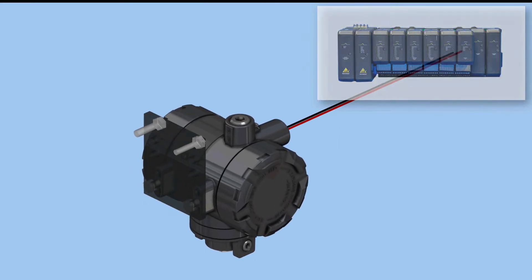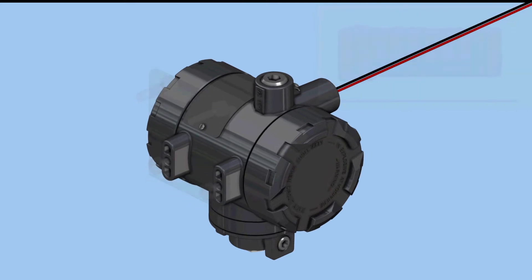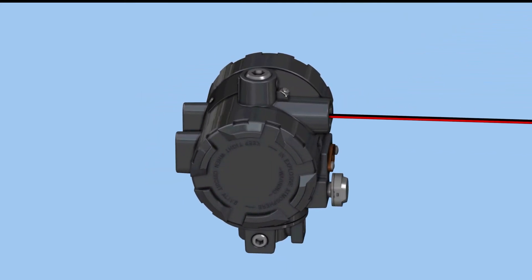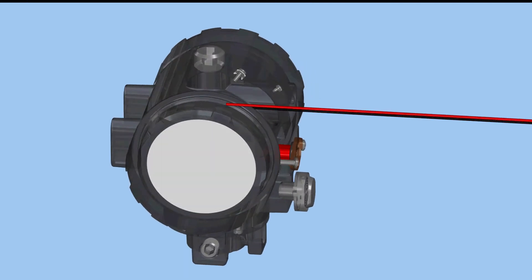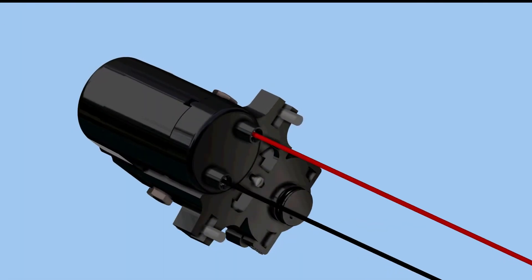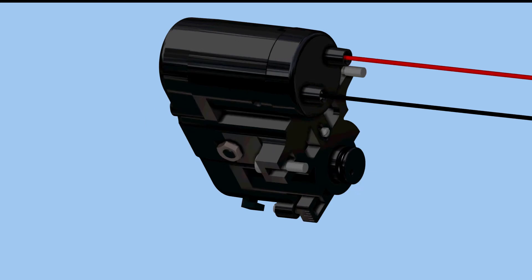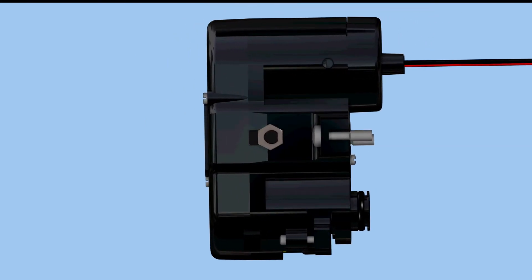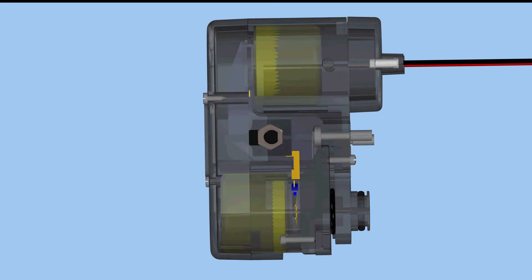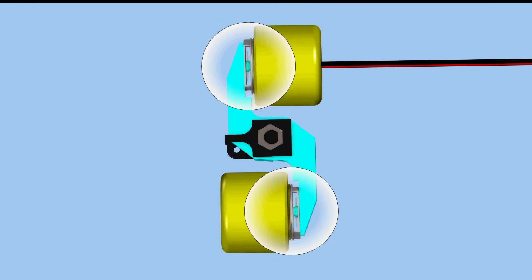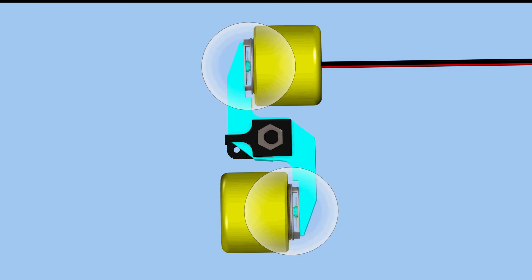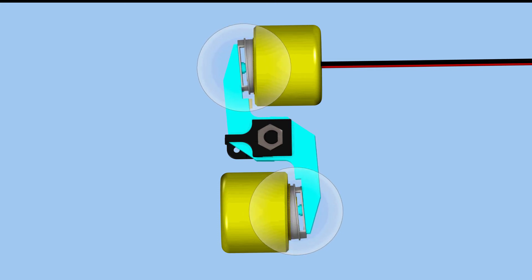In this animation, we have a 4 to 20 milliamp input signal that needs to be converted to a pneumatic output signal. A common pneumatic output signal is 3 to 15 PSIG. The electronic 4 to 20 milliamp input signal is applied to an electromagnet. As current is changed to the electromagnet, magnetism increases or decreases.